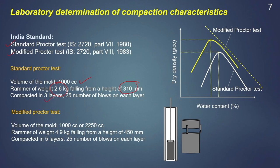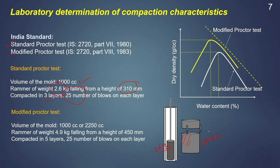Both methods are almost identical. In a standard proctor test, we take a mold of volume 1000 cc and a rammer weighing 2.6 kilograms that falls from a height of 310 millimeters. The soil is compacted in three different layers, and each layer is compacted with 25 blows. When we do a compaction, we get a plot between dry density and water content. We need to take the soil sample at different water contents and determine the dry density corresponding to those water contents, then plot a graph to get the compaction curve. This can also be done for a modified proctor test.